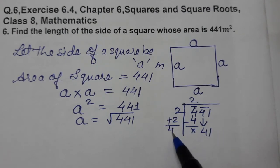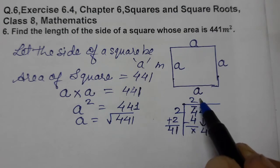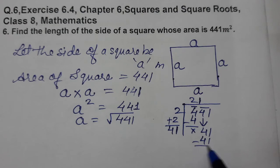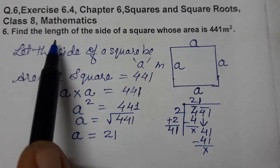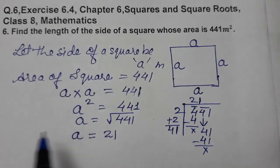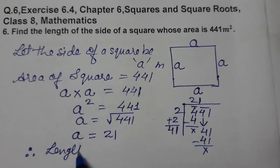So we got the value for a as 21, and this is what we need to find. Therefore, length of the side of the square